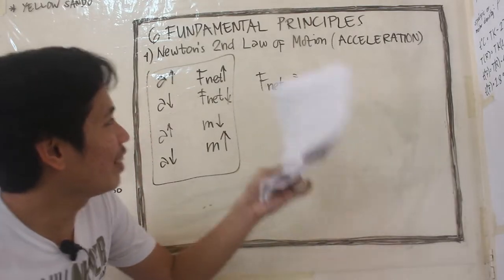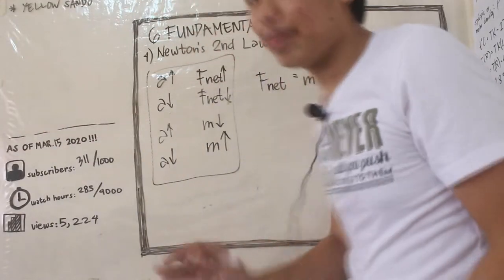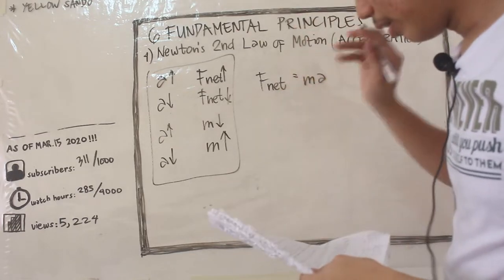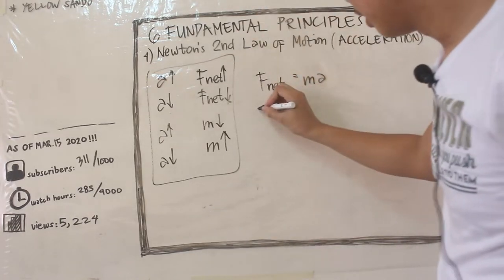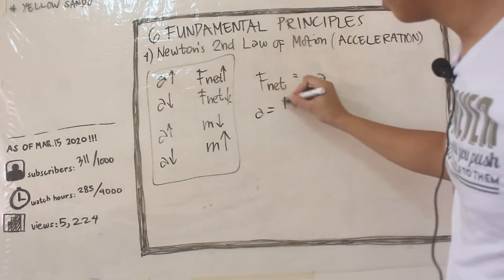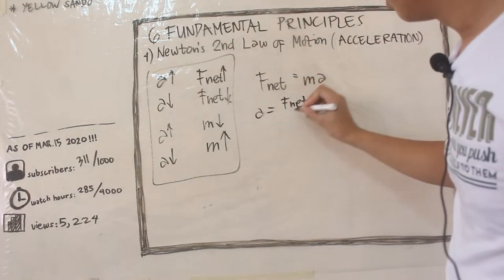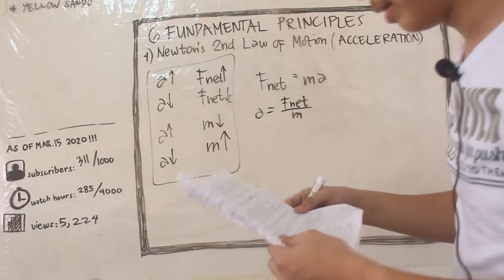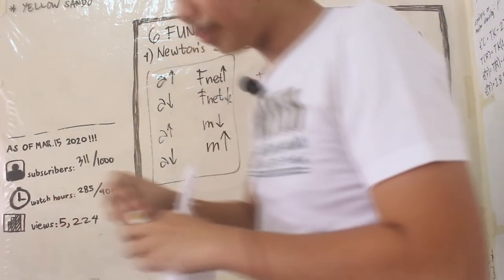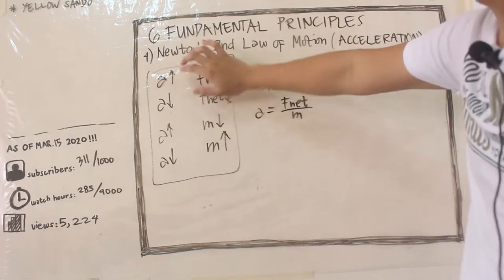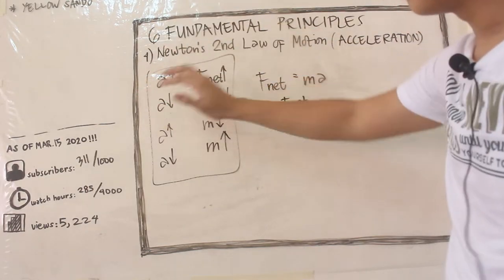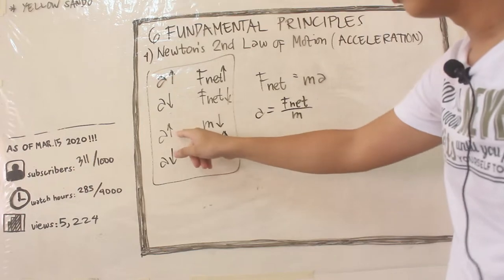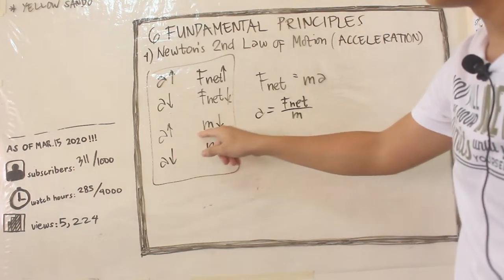Kung i-rearrange natin ito, alam naman natin kung paano mag-rearrange. Makukuha natin: acceleration is equal to F_net over M. Dito natin makikita kung ang acceleration ay directly proportional ba sa F_net, tsaka inversely proportional ba siya sa M.